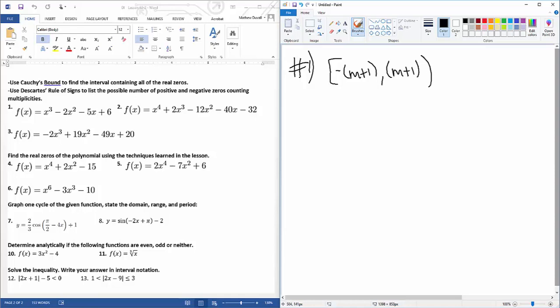So we have to take our constant, put it over our leading coefficient. Basically every single one of these put over the coefficient, and whichever one is the largest, that's going to be your M. So all your zeros are going to be in between negative six plus one and six plus one.